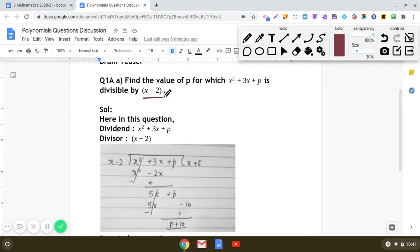So first step is we are going to follow the long division method and we will divide x² + 3x + p by x - 2. So let us start the division. x² + 3x + p has to be divided by x - 2.